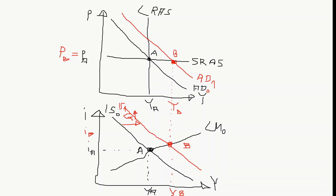The short-run equilibrium is in point B. We always said that in the short run, prices are sticky — the prices do not change. This is what we see in this graph: PA equals PB, prices do not react in the short run. Demand increased from A to B, and so does supply, but only in the short run. The companies are producing more and thereby this demand is filled, and the economy ends up in a kind of boom situation. But in the longer run, prices are not sticky — they can change, and there is upward pressure on goods prices.